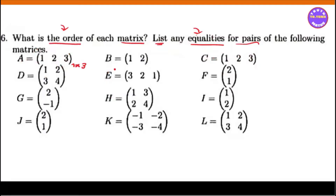One by three matrix. Now, one by three matrix. So here we have the order of the matrix. The matrix here is one by two matrix. Then one by three matrix. One by three matrix. Then row two, column two is two by two matrix.